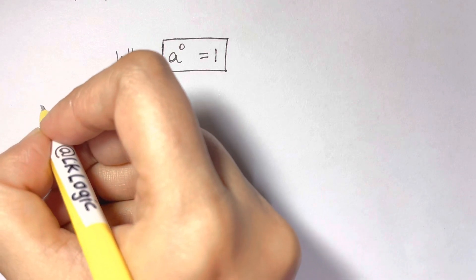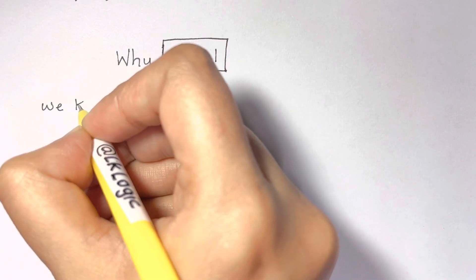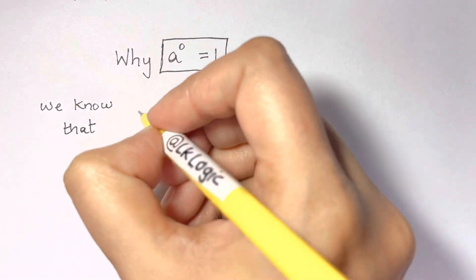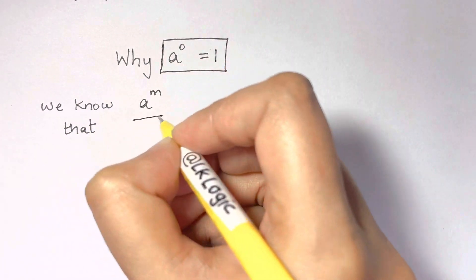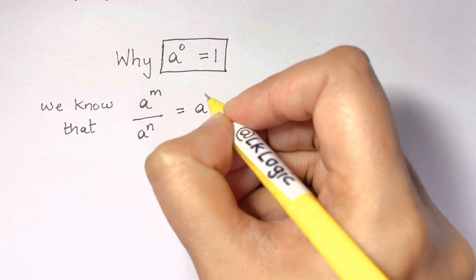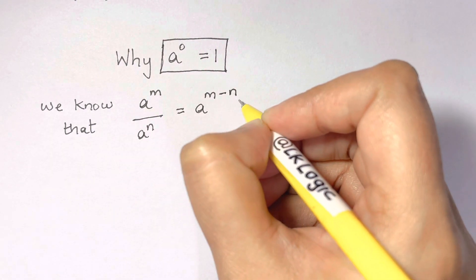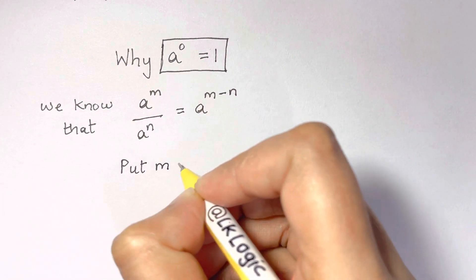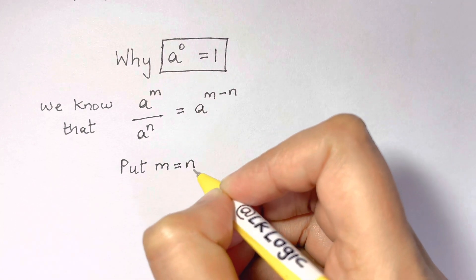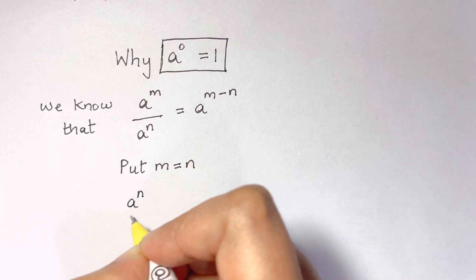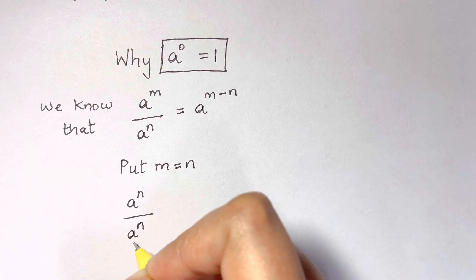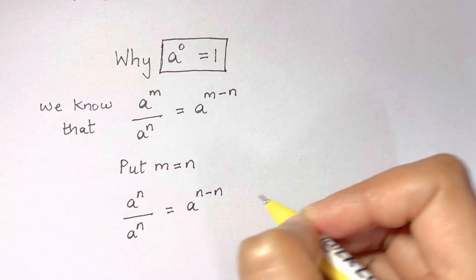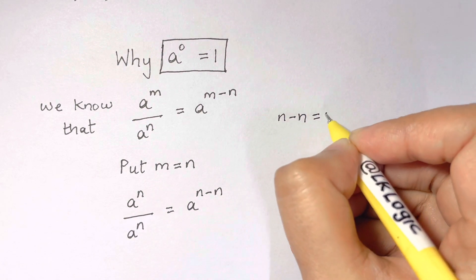Why does anything raised to the power of zero equal one? You must know this property: a to the power of m over a to the power of n equals a to the power of m minus n, when you have the same base and division between them, you subtract the powers. Now we put m equal to n, so we get a to the power of n over a to the power of n, which equals a to the power of n minus n.